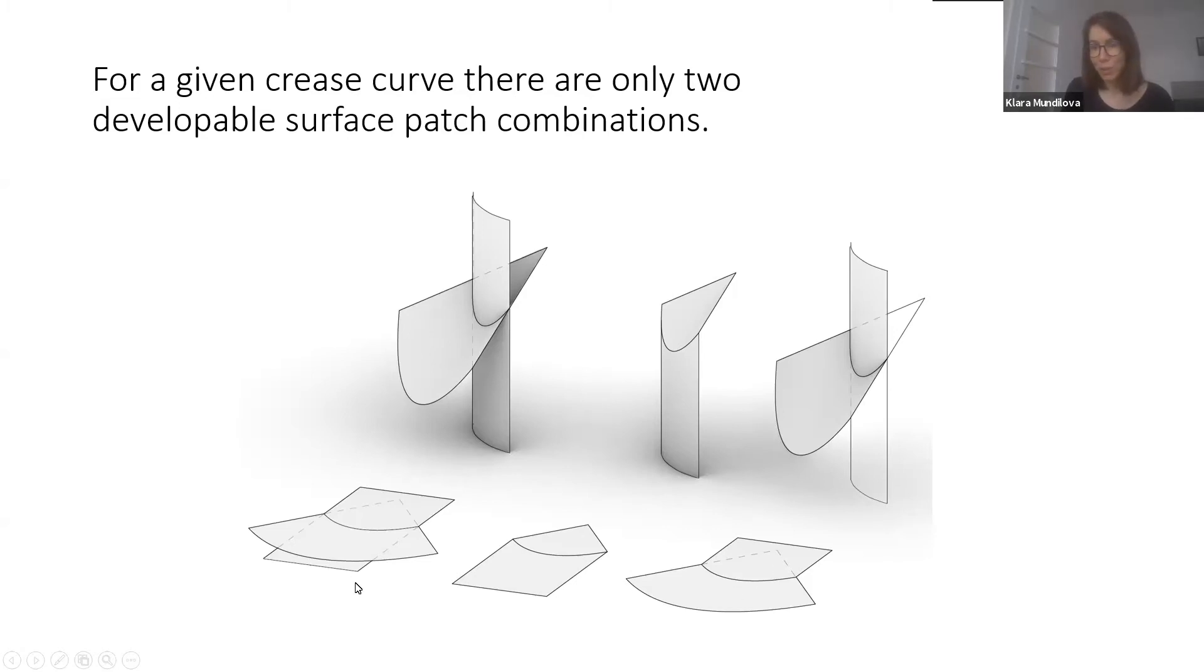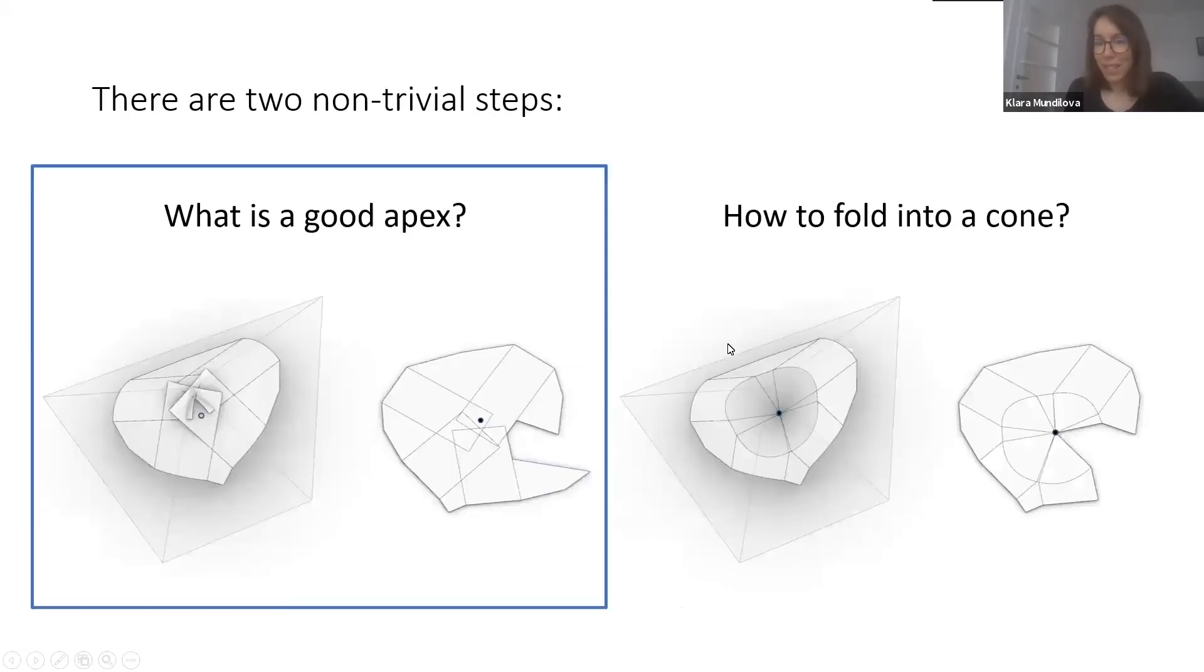What we shouldn't do to have a developable configuration is to choose this part of the cone and the lower part of the cylinder. For our approach, we want to always be able to choose the lower part of the cylinder and the upper part of the cone. Whether we can do that or not depends very much on the location of the 3D apex. This brings us to the next question: what is a good apex and how do we find a 3D apex so that we can actually choose this pair of surfaces?